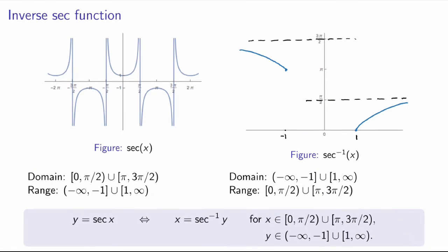The inverse secant function and also the inverse cosecant function are a little trickier to define. There is no universally accepted convention for the choice of principal branch. So I'll stick with the convention used in the textbook, and later in this video I'll tell you why this is a good convention. You have to be very careful if you use other resources — things like Wolfram Alpha may use different choices of conventions for the principal branch for the inverse secant and inverse cosecant functions.